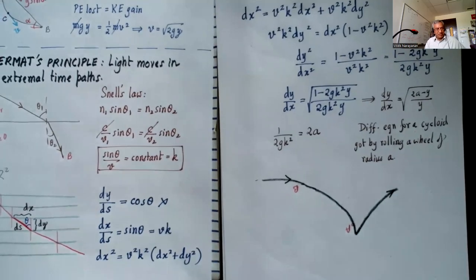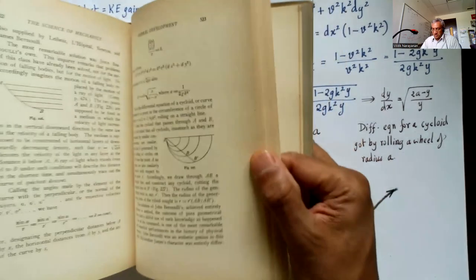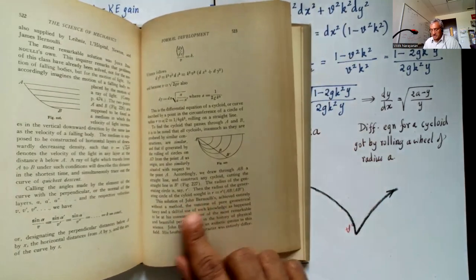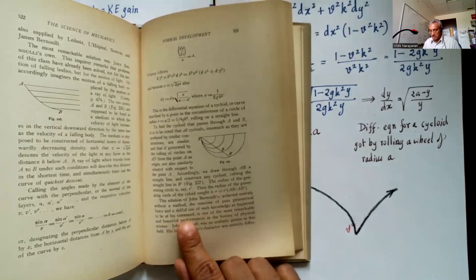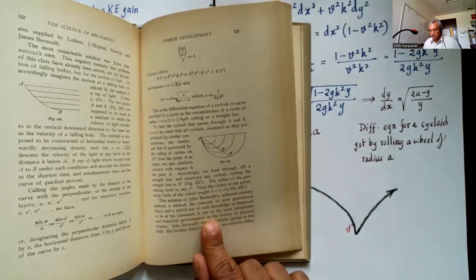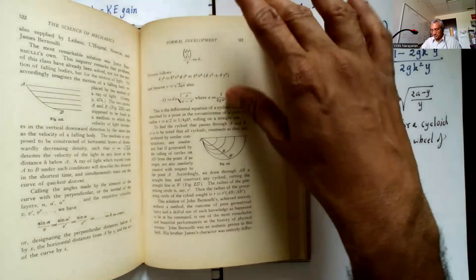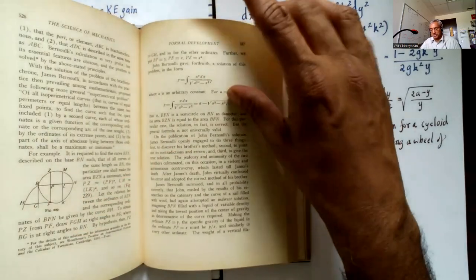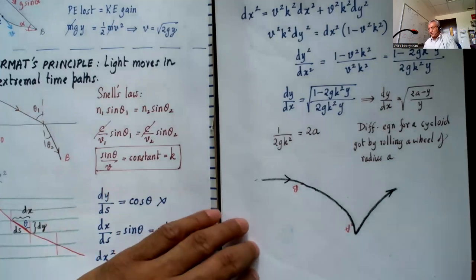That's the solution of Bernoulli, and Bernoulli's solution is still one of the best. Mach writes: 'The solution of John Bernoulli, achieved entirely without a method, the outcome of pure geometrical fancy and a skillful use of such knowledge as happened to be at his command, is one of the most remarkable and beautiful performances in the history of physical science.' I'm going to skip his brother's solution and go straight for the solution that we have in modern times.